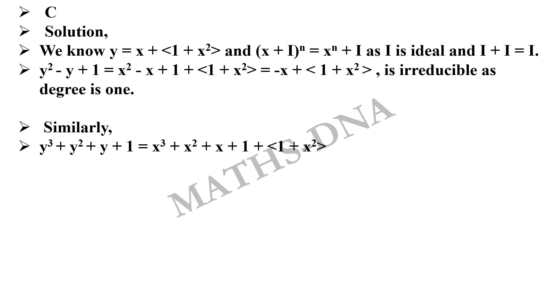Now similarly for the second one, y³ + y² + y + 1 = x³ + x² + x + 1 + <1 + x²>. Taking x² common from the first term, we get x²(x + 1) + 1(x + 1) + <1 + x²> = (x + 1)(x² + 1) + <1 + x²>, which is 0 in our given R, and so it is reducible.